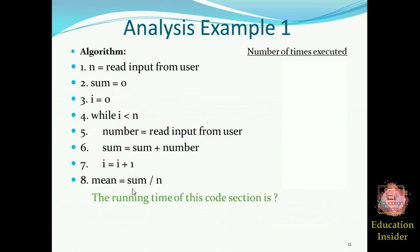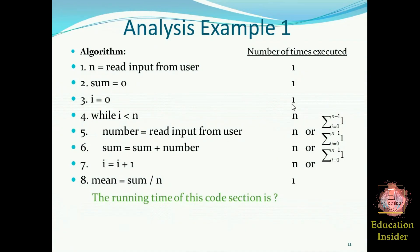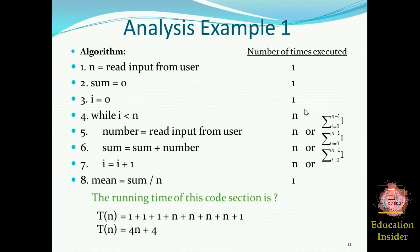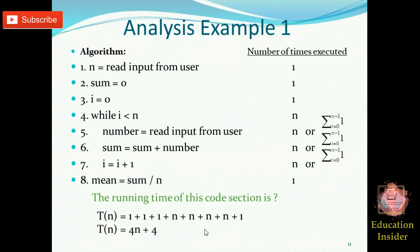At line 8, this is also an assignment statement, so it will take one constant time for its execution. This is the number of times each operation is going to run. After summing up all these, we get the running time of this specific code, which is 4n + 4.